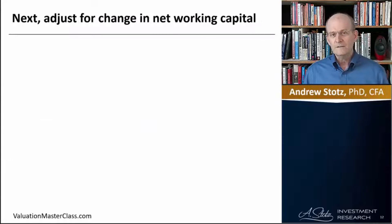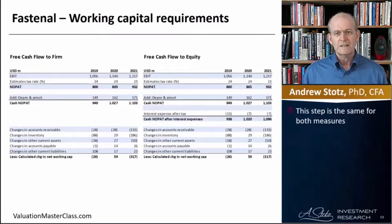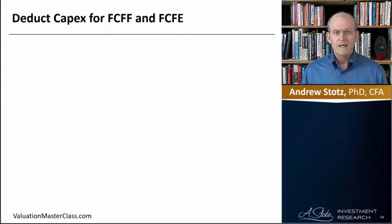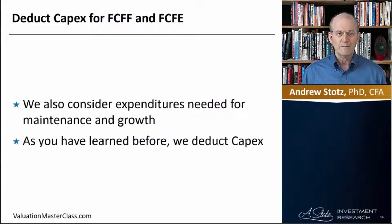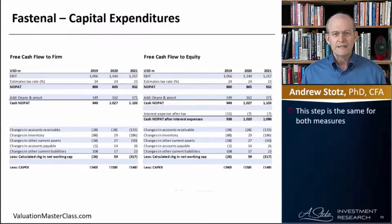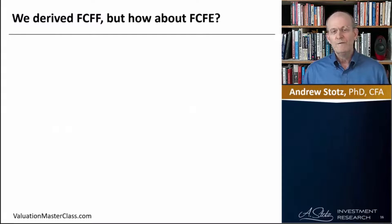Next, we make an adjustment for net working capital. This step is the same for both, and you can see the exact same calculation for both. Then we want to deduct CAPEX, considering both maintenance and growth CAPEX. Again, this is the same for both. We've now derived the free cash flow to the firm.